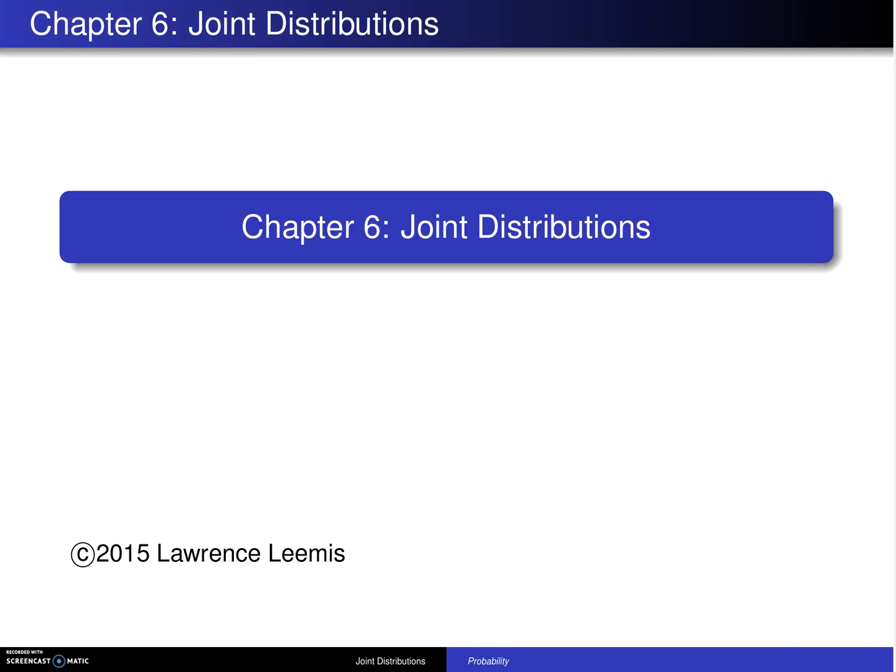This is the beginning of Chapter 6, which concerns joint distributions. Joint distributions arise when there are two or more random variables in play in a particular probability problem.